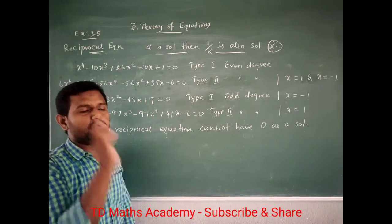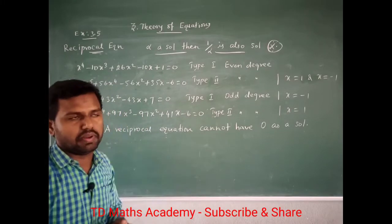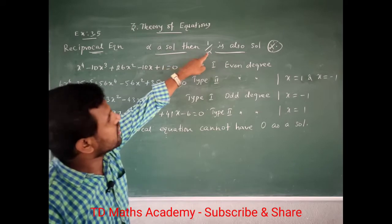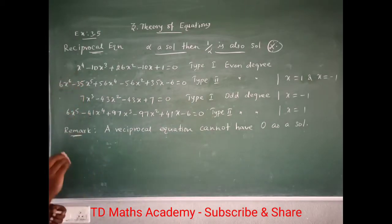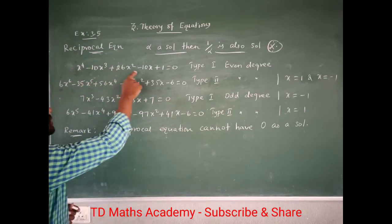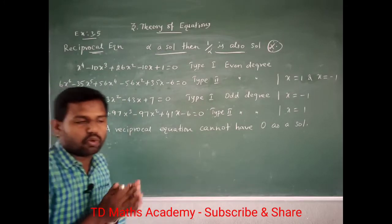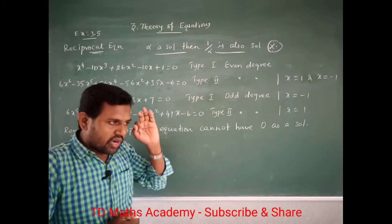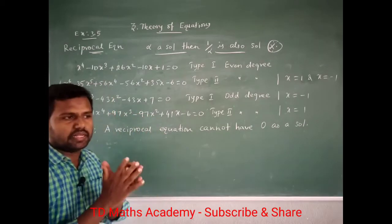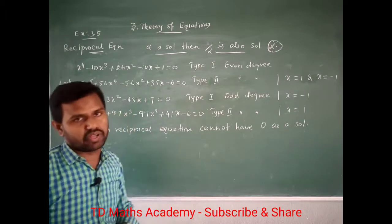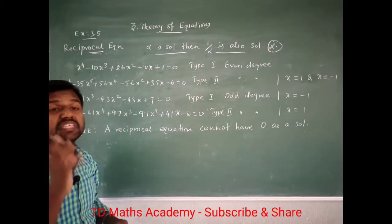For a reciprocal equation: if alpha is a solution, then 1 by alpha is also a solution of the given equation. For example, if 3 is one solution of this equation, then 1 by 3 is also another solution, because this is a reciprocal equation. So if alpha is one root, 1 by alpha is compulsorily another root in reciprocal equations.